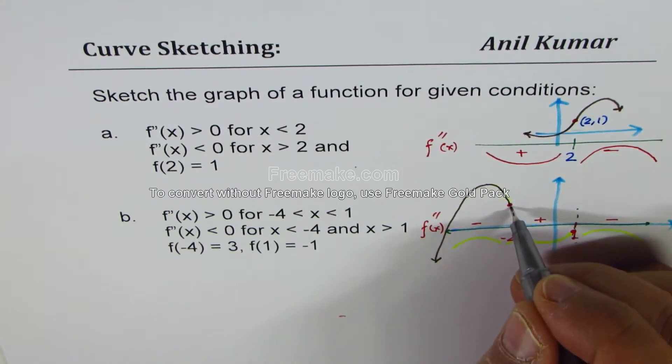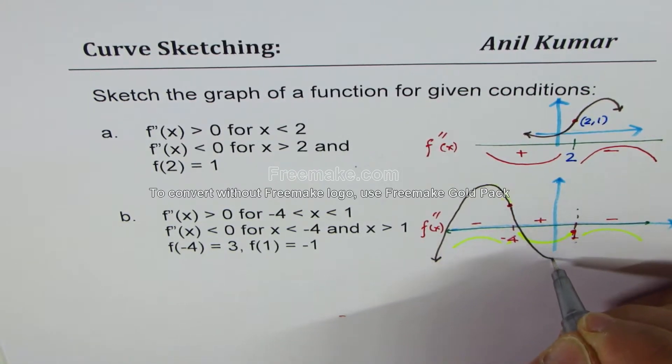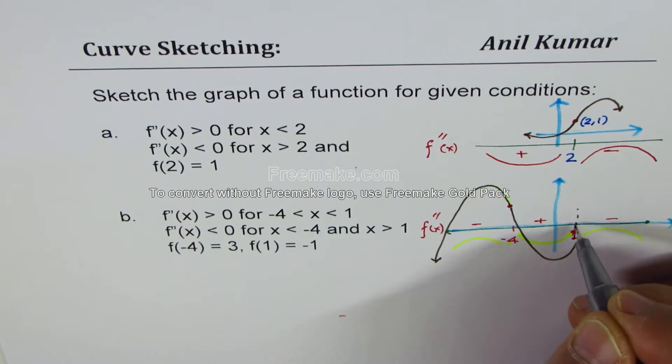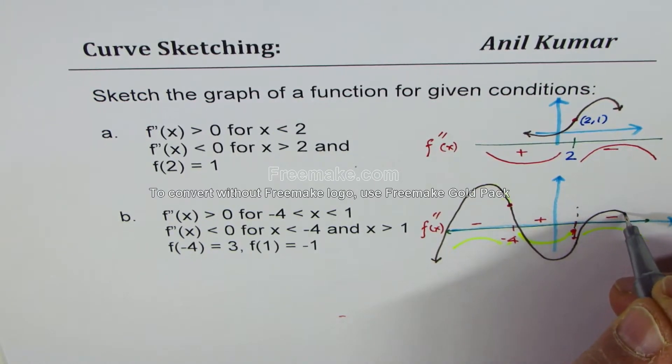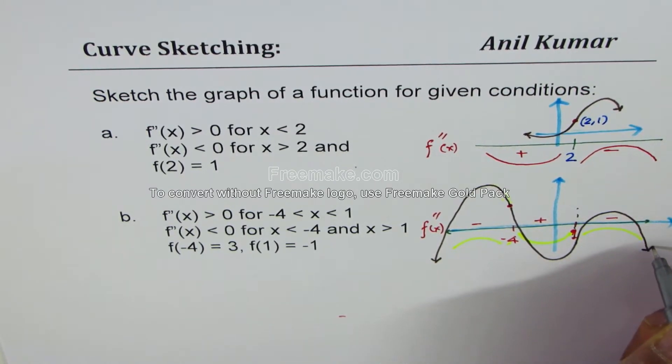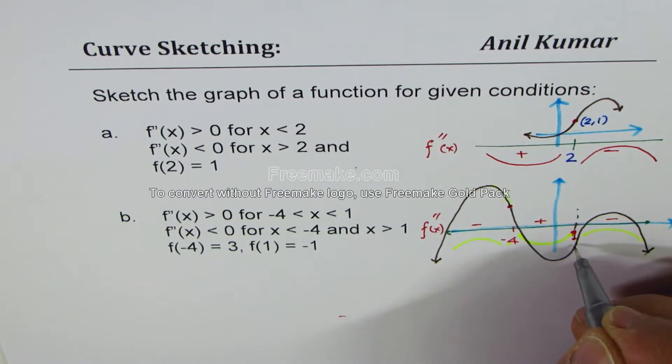So from here, we can go kind of anyway like this. But as soon as we reach this point 1, we have to change the concavity. So we could have concavity kind of like this. Do you see that part?